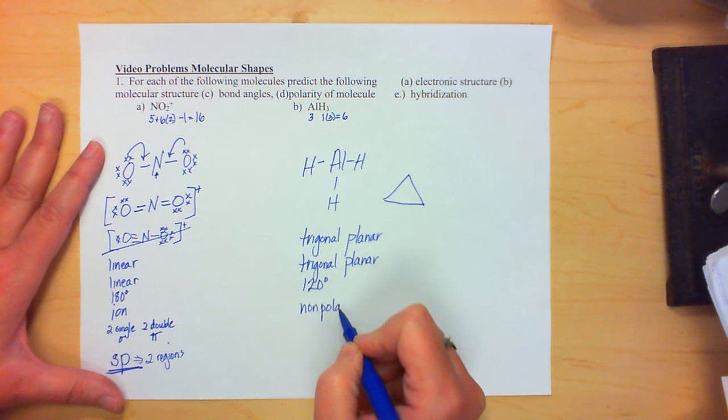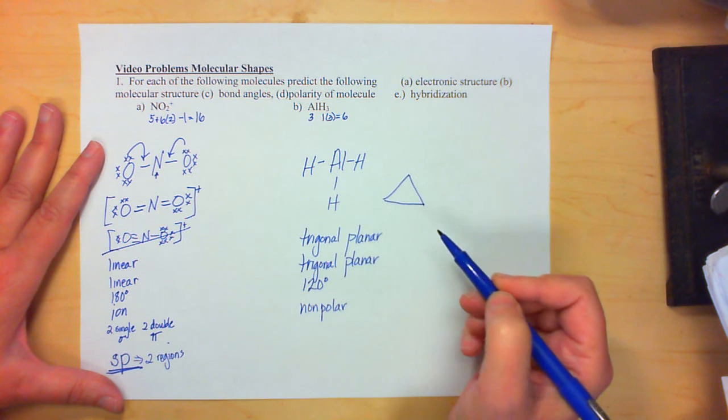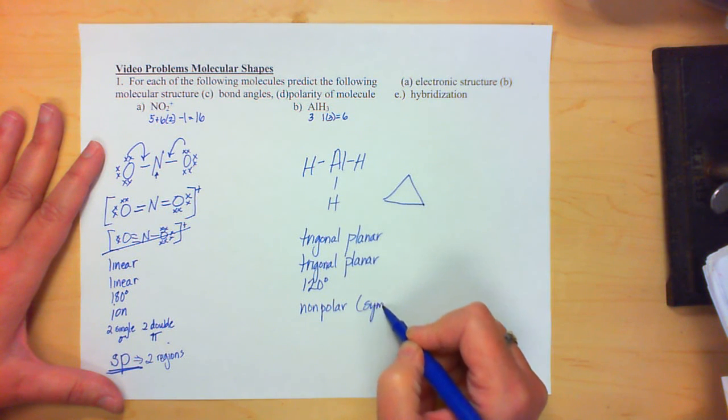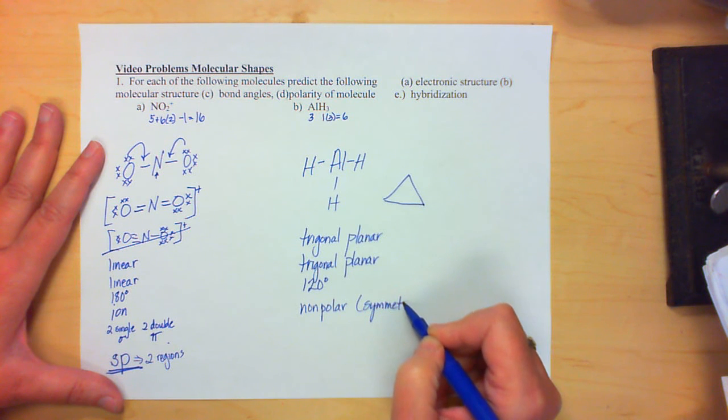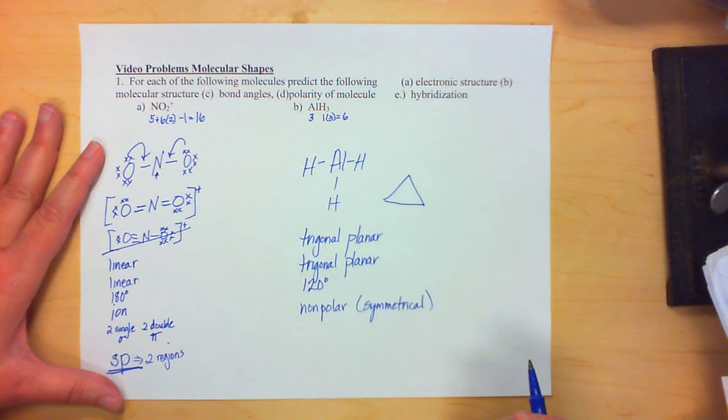The polarity would be nonpolar. Because the bonds may or may not be polar, but it's a perfectly symmetrical molecule. So the symmetry will take care of unevenness in polarity, if there is any, because it's all unified.